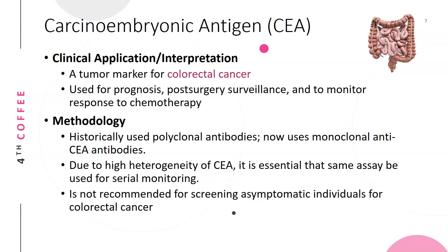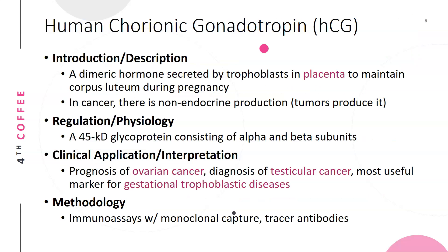CEA is used as a tumor marker for colorectal cancer for prognosis, post-surgery surveillance, and to monitor response to chemotherapy — it must be elevated at onset to serve this purpose. Historically, polyclonal antibodies were used; now monoclonal antibodies are used. Due to the high heterogeneity of CEA, it is essential to use the same assay for serial monitoring — no switching between assay types or analyzers. CEA is not recommended for screening asymptomatic individuals, as it can be mildly elevated in healthy individuals, especially smokers.